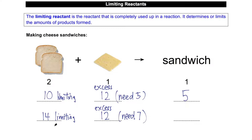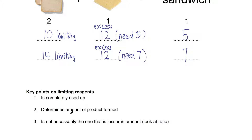All my bread will be used up, so in the end I can make 7 pieces of sandwich. From this example I want to drive across a few key points. Number one: the limiting reagent is completely used up in the reaction. Number two: we look at the limiting reagent to determine how much product will be formed — we cannot look at the one in excess. Lastly, as shown in these two examples, it is not necessarily the one that is smaller in amount.